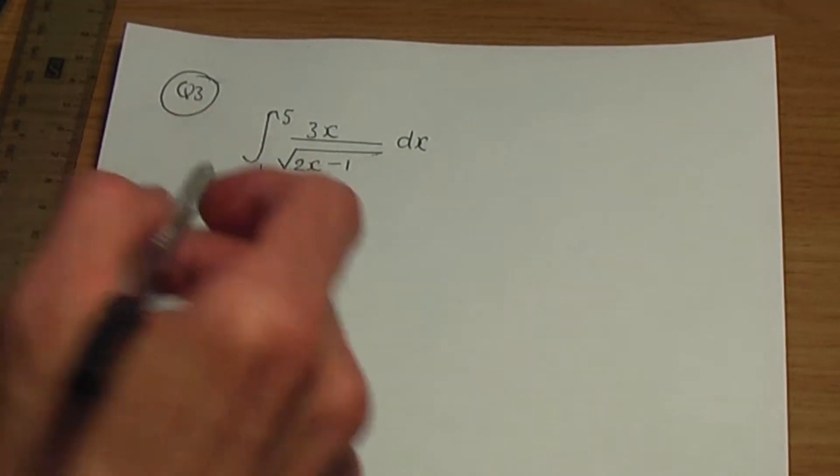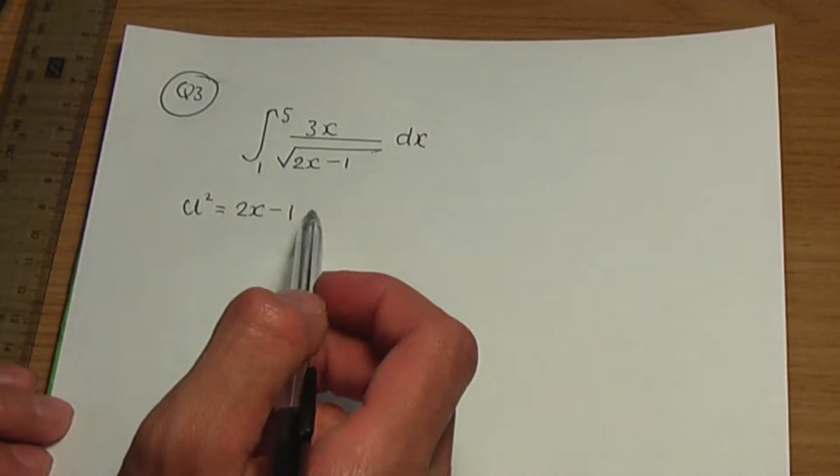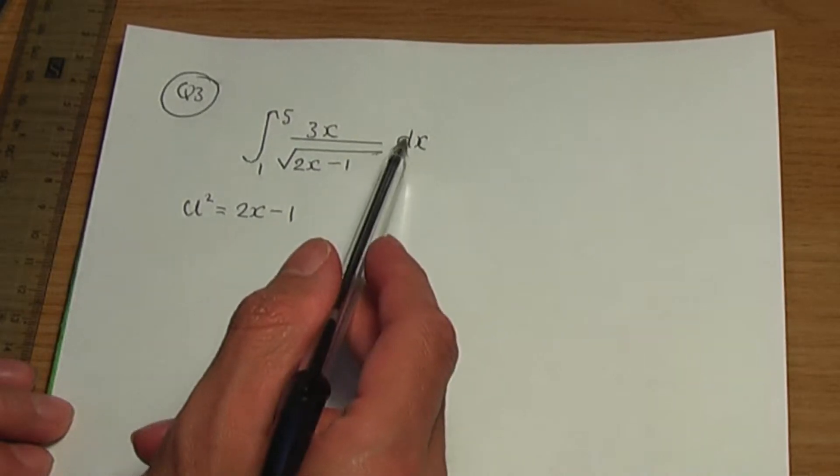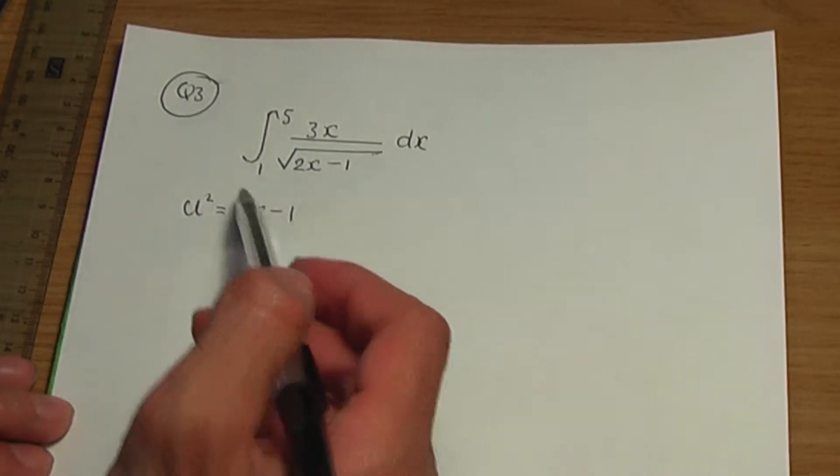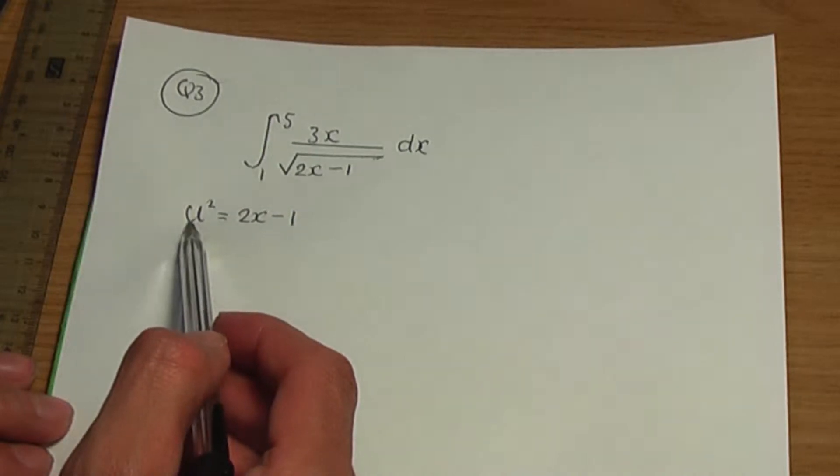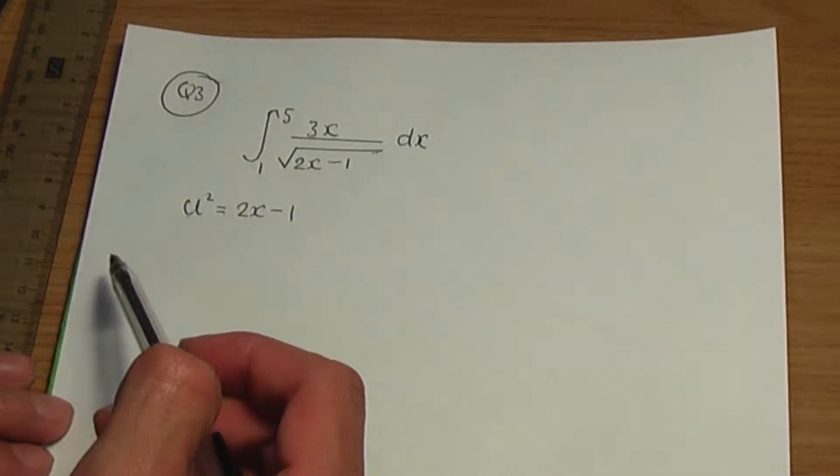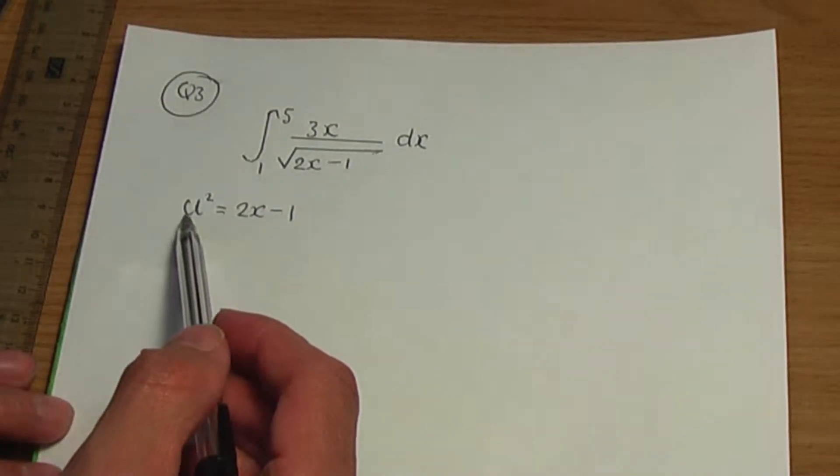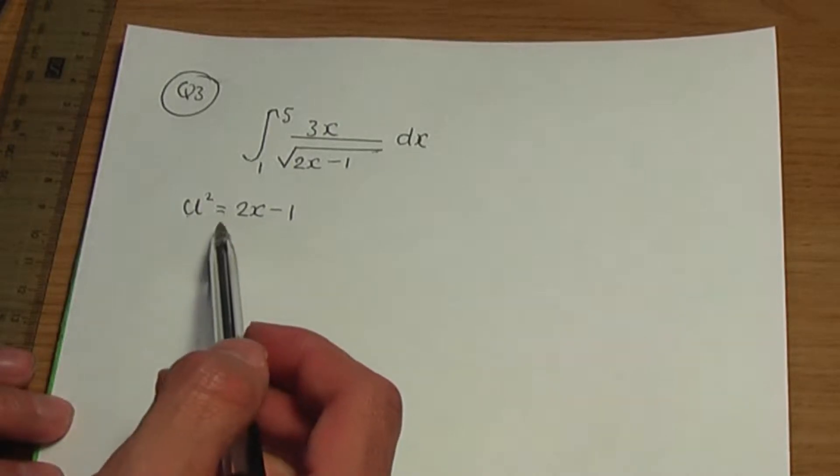Back to this example. Now, the idea of substitution is to replace the existing variables x and dx with new variables which are going to be u and du. And the big idea with the substitution process is to ease the integration process.